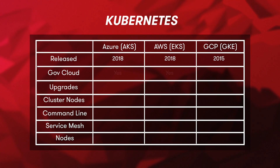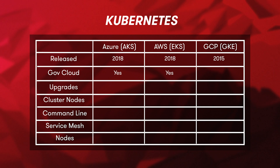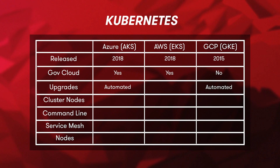All three services are globally available, but an advantage of using Azure and AWS is that you can run Kubernetes on the government cloud — the special infrastructure that meets the needs of federal governments worldwide. Google Kubernetes Engine unfortunately does not have this option. AKS and GKE are more automated: they automatically handle security patches on the control plane and upgrade cluster nodes. However, upgrades and node health repair for EKS components tend to be much more manual.